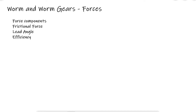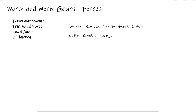The typical worm and gear setup includes a worm that resembles the overall geometry of a threaded screw, which we'll call the worm, and a gear that has all the characteristics of the helical gears we have studied in previous videos, which we'll call the worm gear.